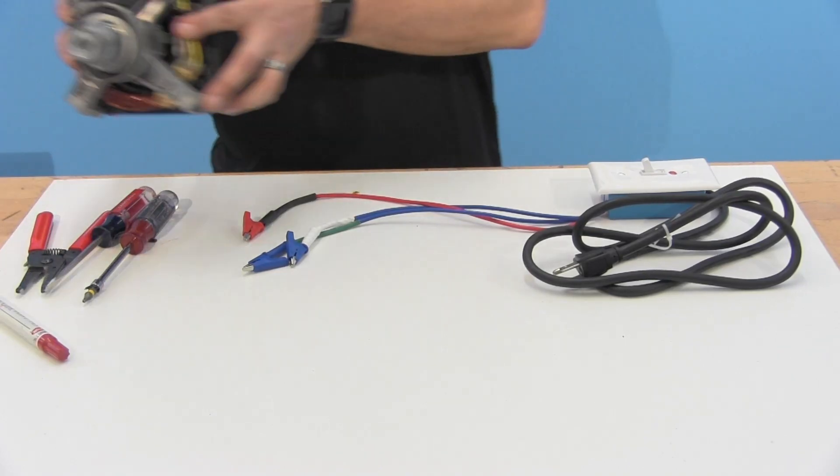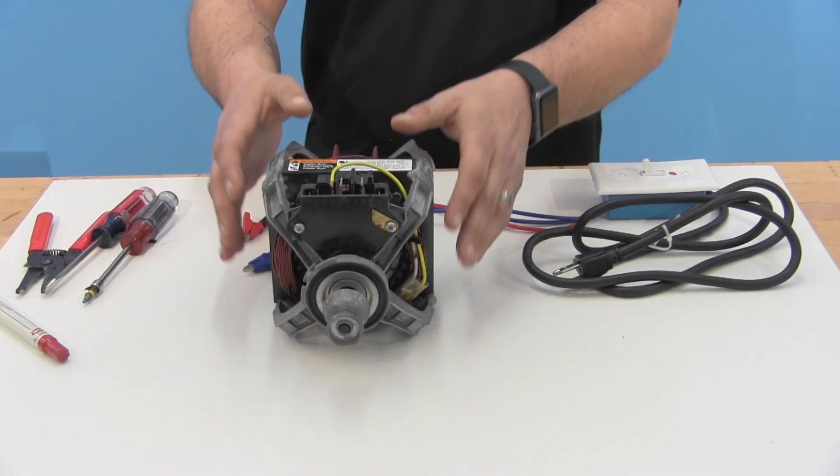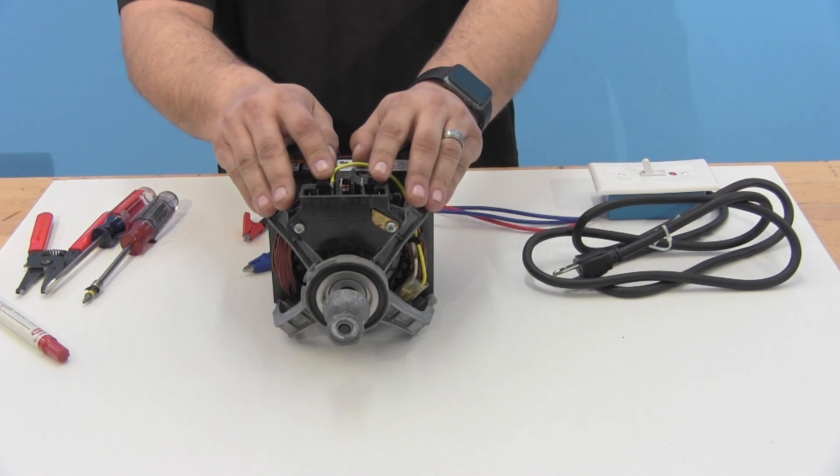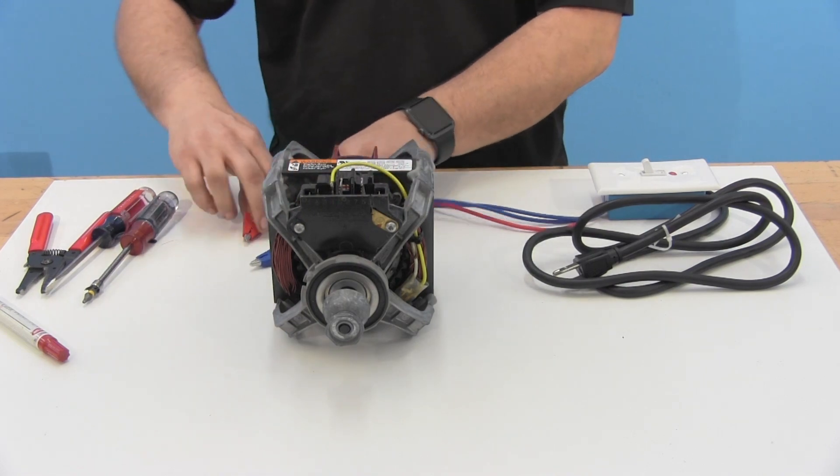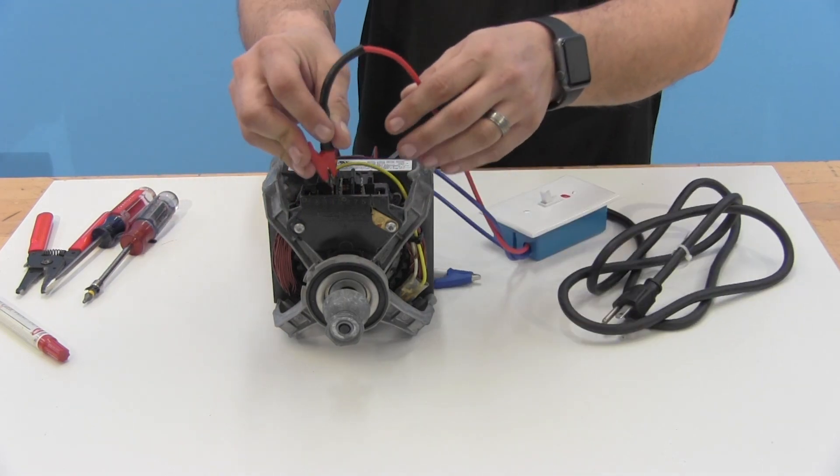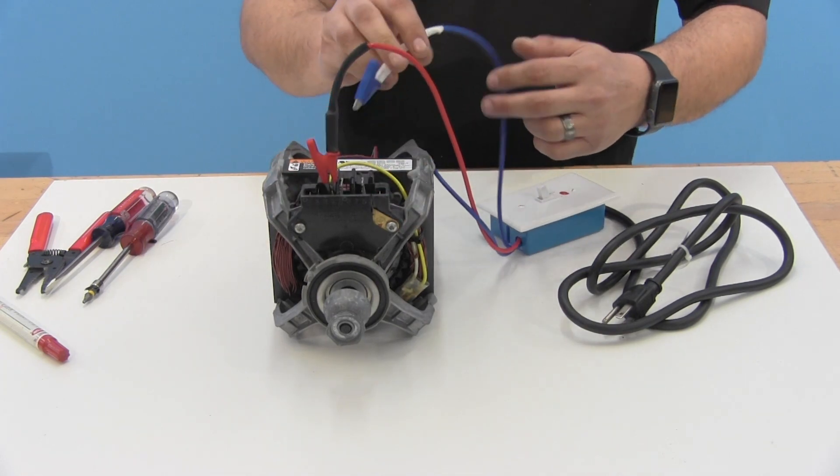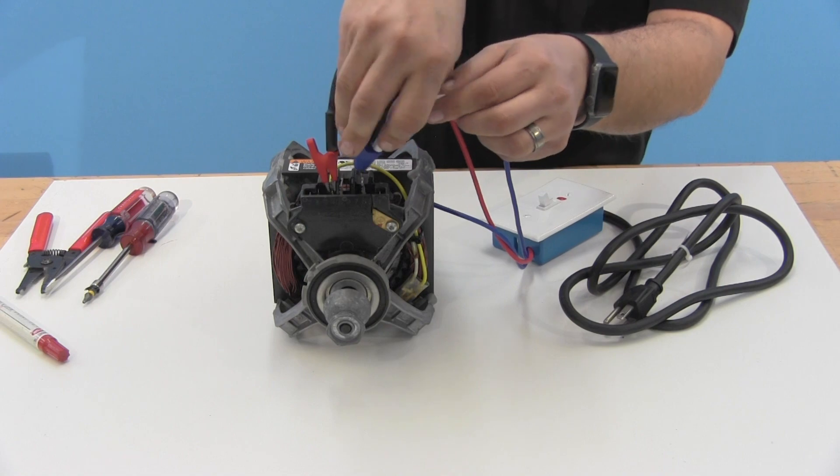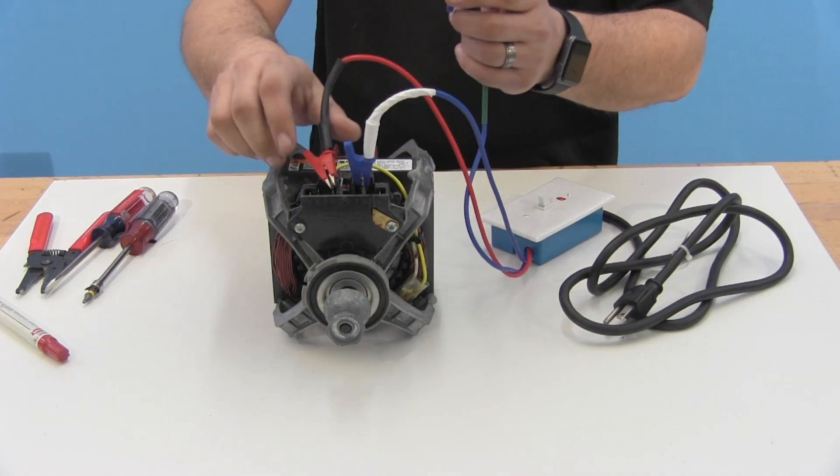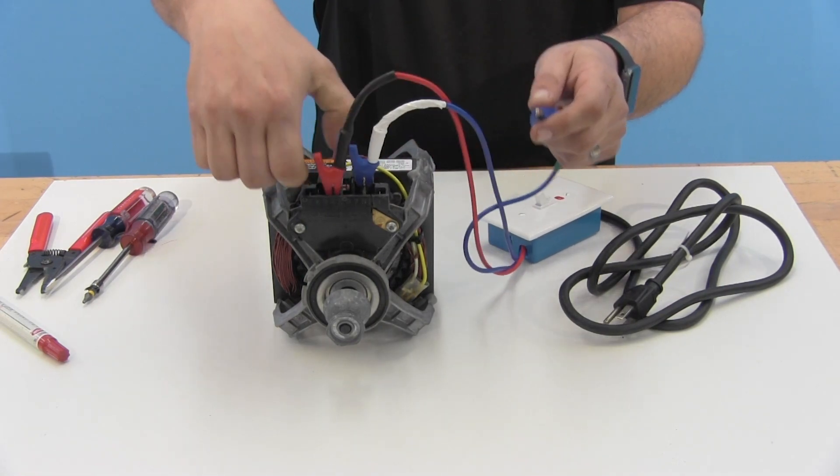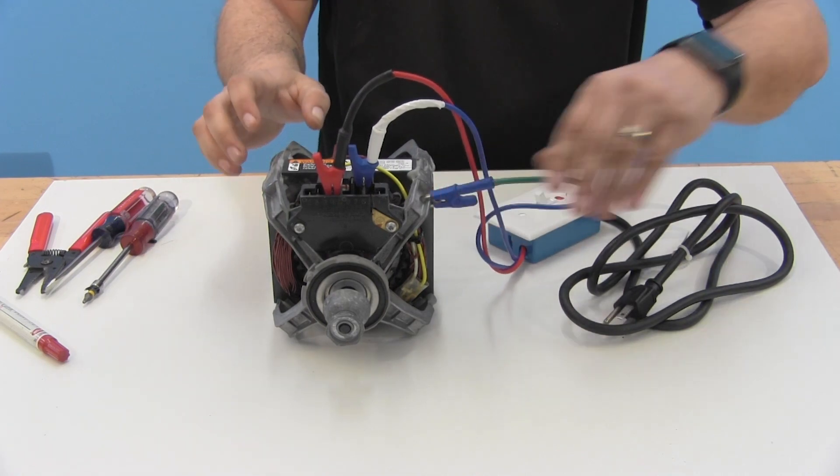To test it, I'm going to use my split phase dryer motor here and I'm going to locate contacts four and five on the motor which are used to start the motor up. I'm going to connect my line voltage to one of the contacts, my neutral to the other, and I'm going to take my ground and I'm going to attach that to the motor itself.